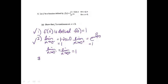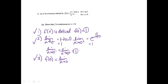So we showed that the limit exists. The third condition for continuity is that f of 0 equals the limit as x approaches 0, and that is true because they both equal 1. So we just showed that f is continuous.